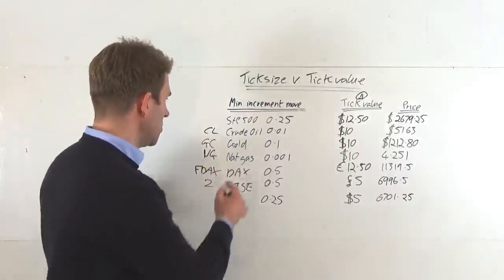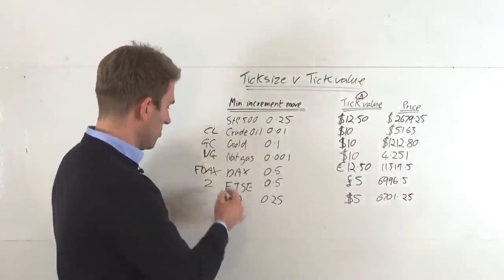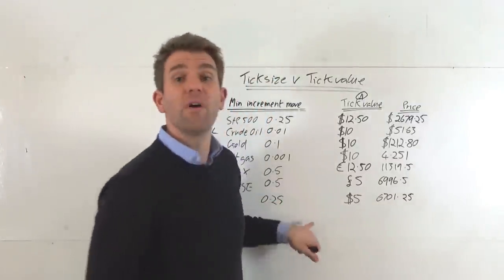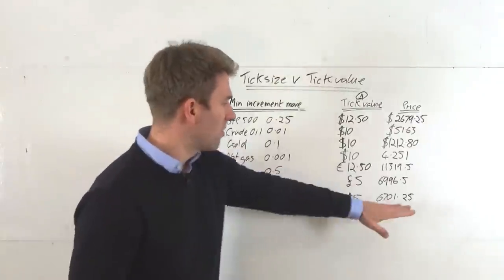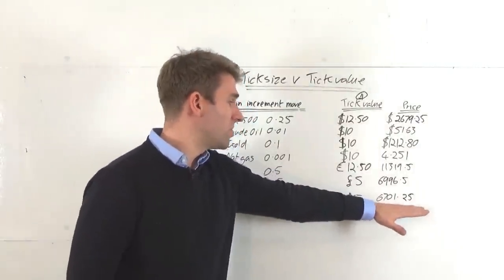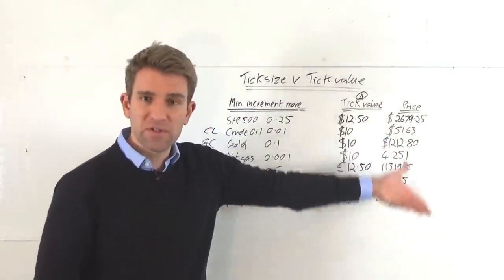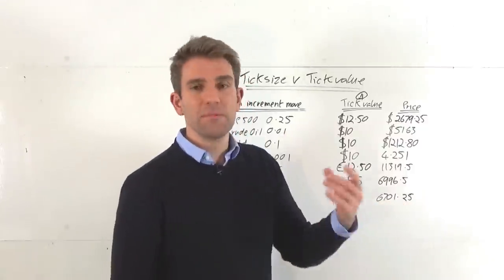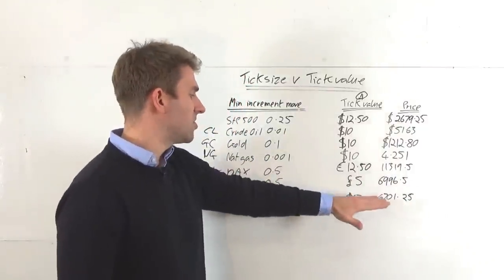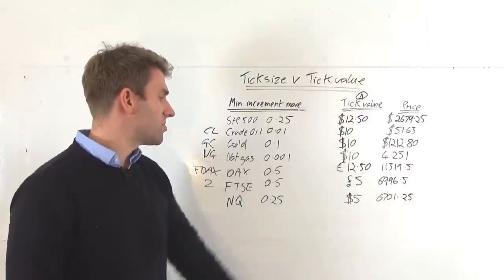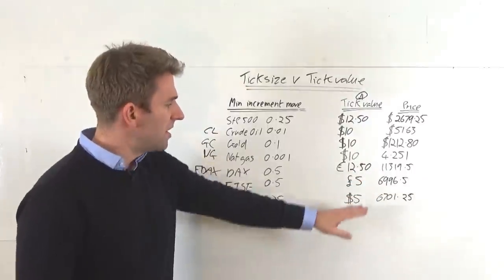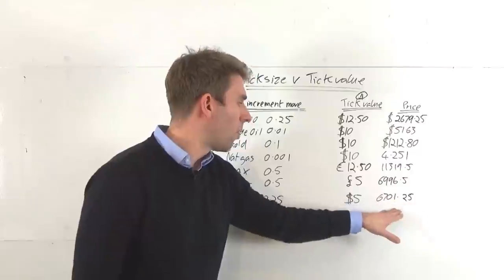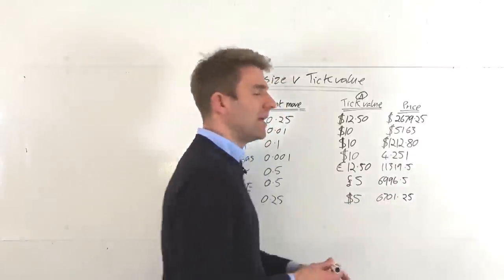The final one is NQ — that's the NASDAQ 100. It moves in 0.25 tick increments. The current price is 6701.25. If we're ticking down, the next price is going to be 6701.00 — that's the minimum it can do — and each one of those is worth $5. You need four of those to move the NASDAQ by one whole point, which would be $20.